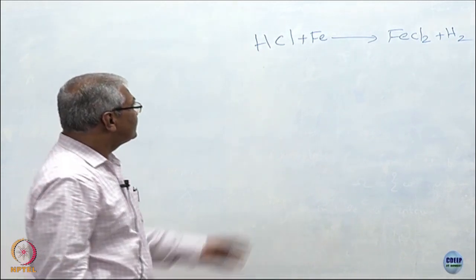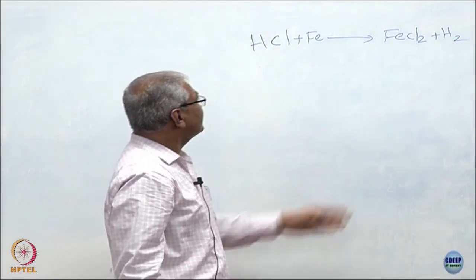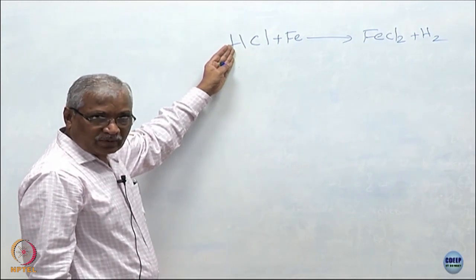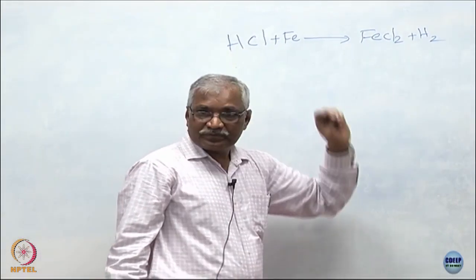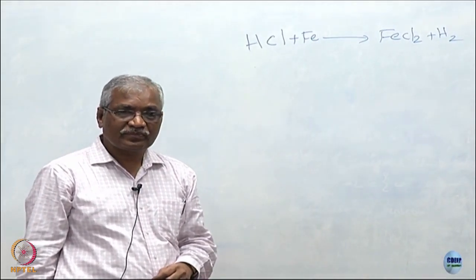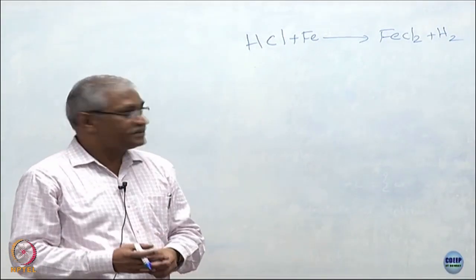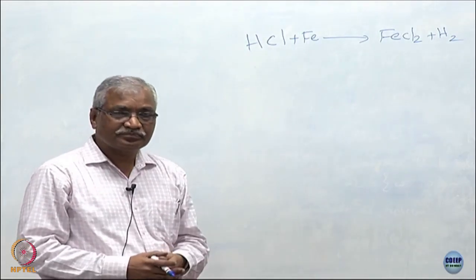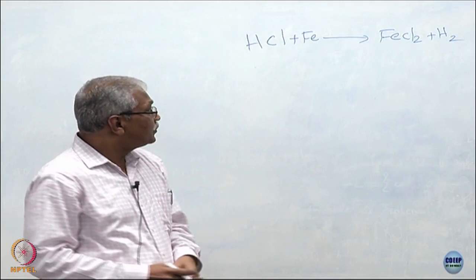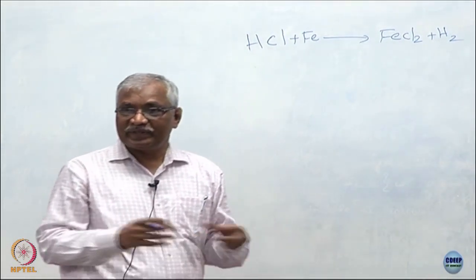This is a corrosion process — the metal is getting oxidized and the hydrogen ions in the hydrochloric acid turn into hydrogen gas by a reduction process. Like that we can have several types of corrosion processes — the iron can be immersed in sulfuric acid, phosphoric acid. Can we really predict if the corrosion can occur with any chemical species?